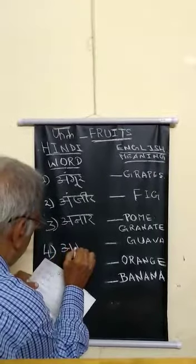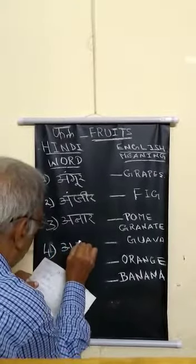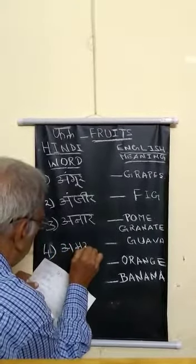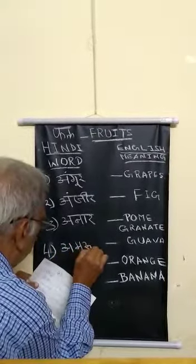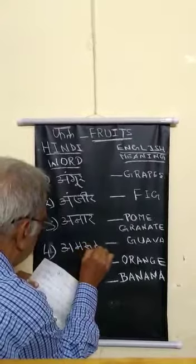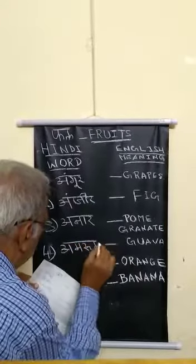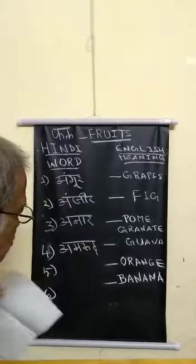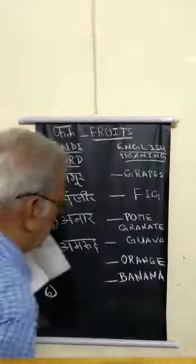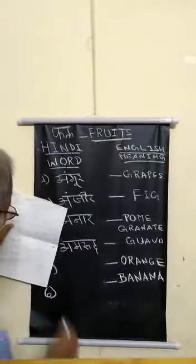Next is Amrur. A, Ma, Ru, Da — Amrur. Amrur means guava.